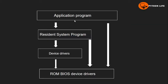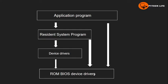In the diagram we can see: first, the application program; next, the resident system program; then the device drivers; and below that, the hardware — ROM BIOS and device drivers. The application program can directly access the ROM BIOS and hardware, and the system program can also directly access the hardware.